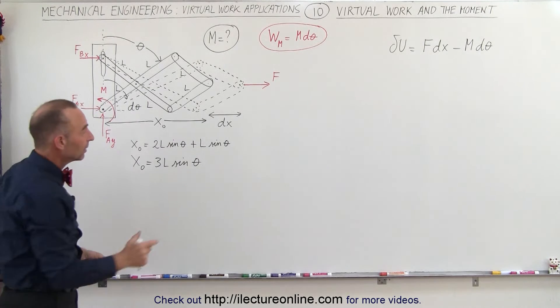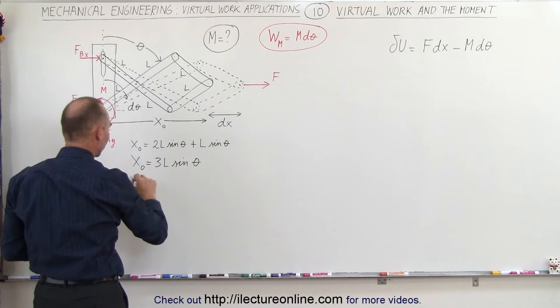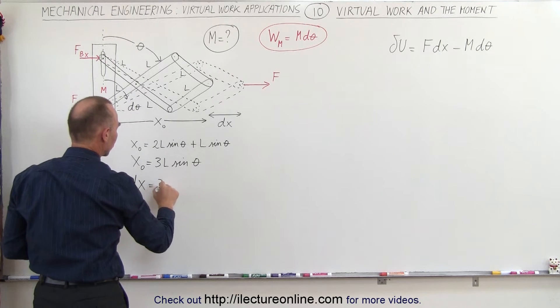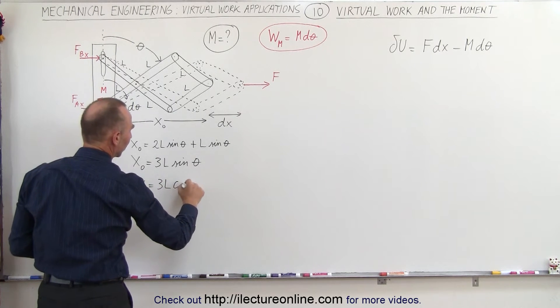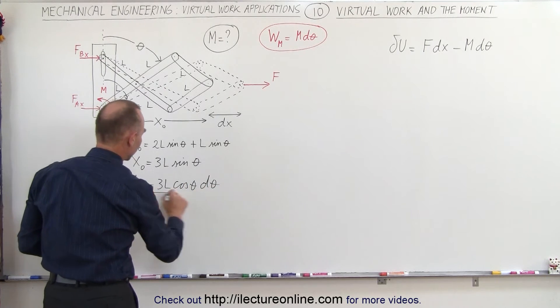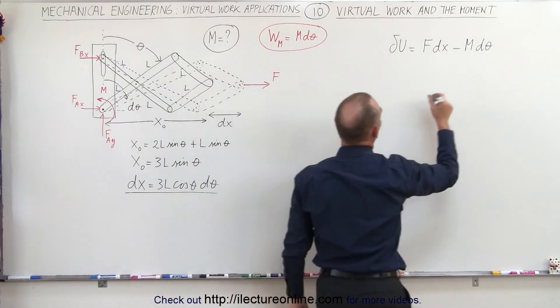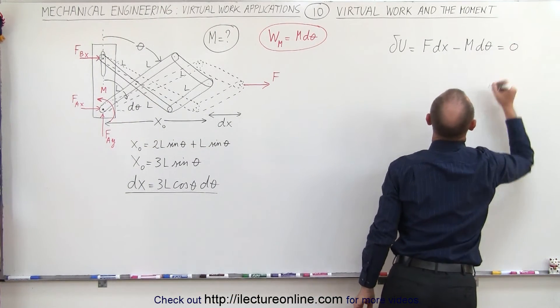Now to calculate the differential dx we take the derivative of both sides or the differential of both sides, so dx is equal to 3L times the cosine of θ dθ. Setting the virtual work equal to zero: F times 3L cosine θ dθ minus M times dθ equals 0.